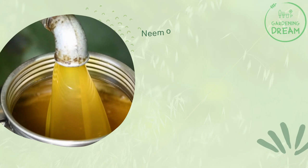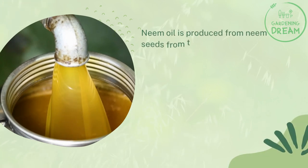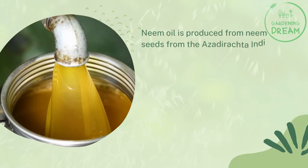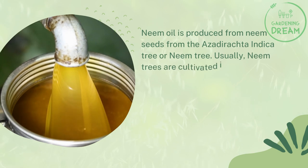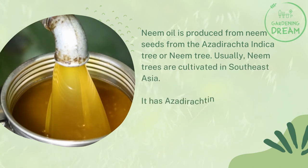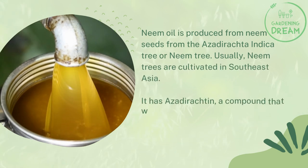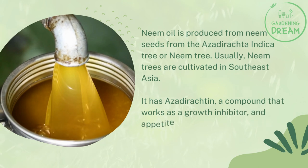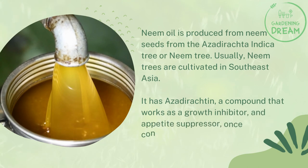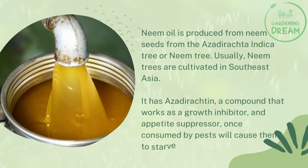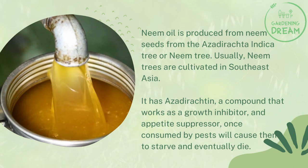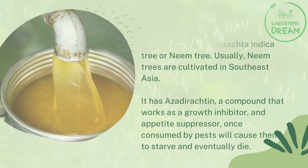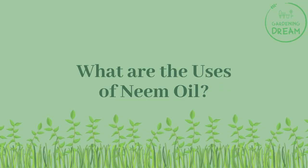Neem oil is produced from neem seeds from the Azadirachta indica tree, or neem tree. Usually neem trees are cultivated in Southeast Asia. It has azadirachtin, a compound that works as a growth inhibitor and appetite suppressor. Once consumed by pests, it will cause them to starve and eventually die.